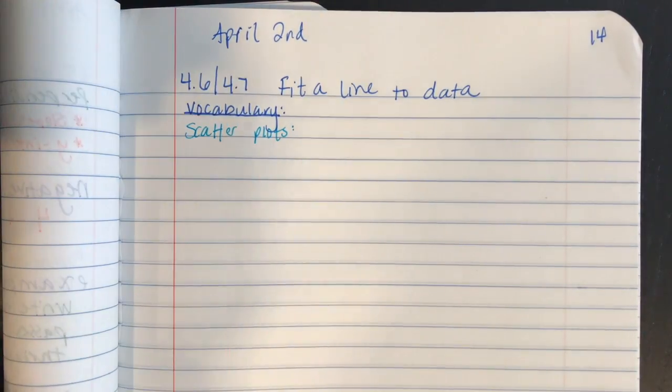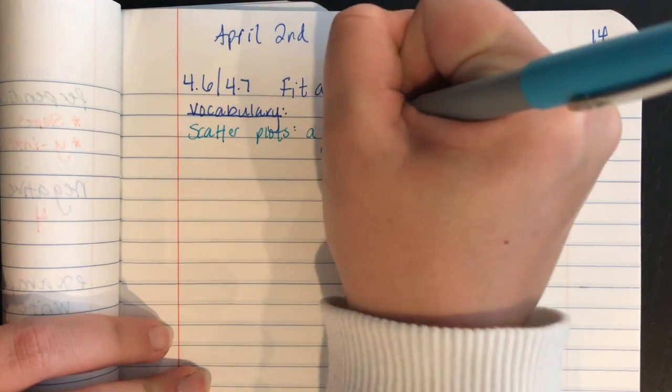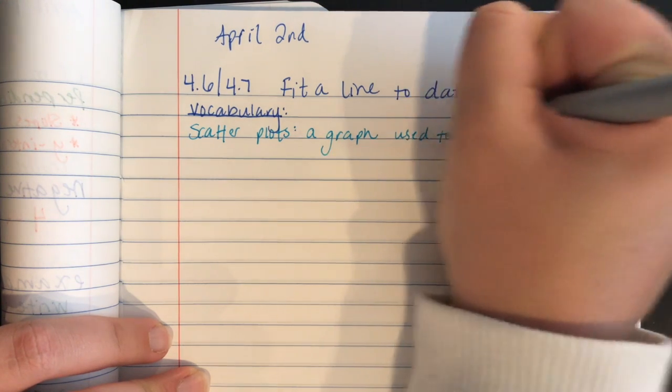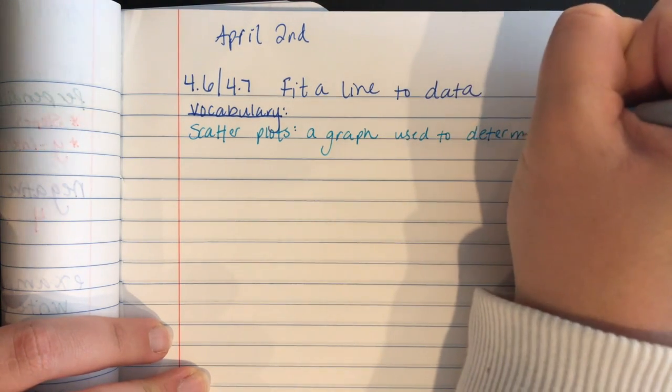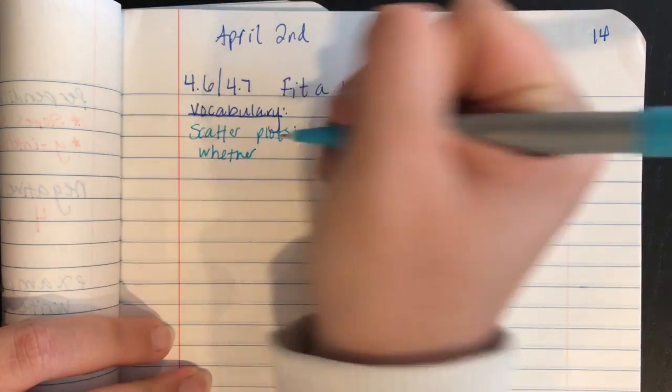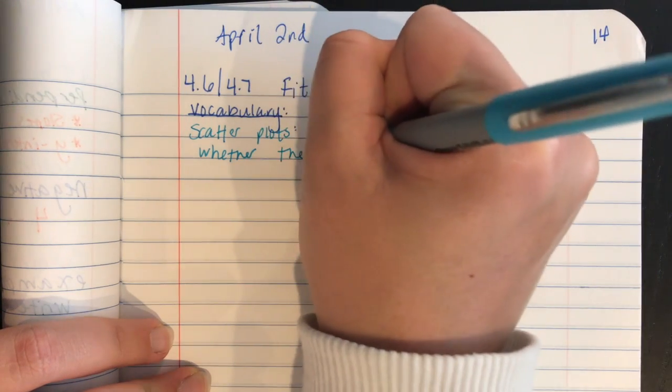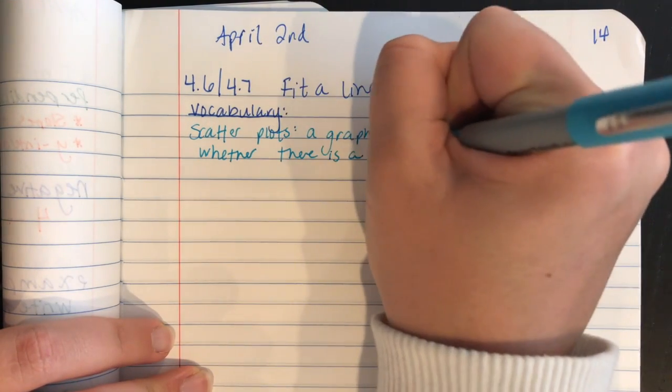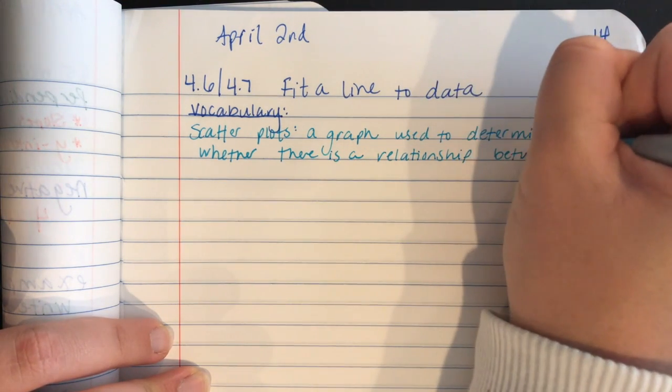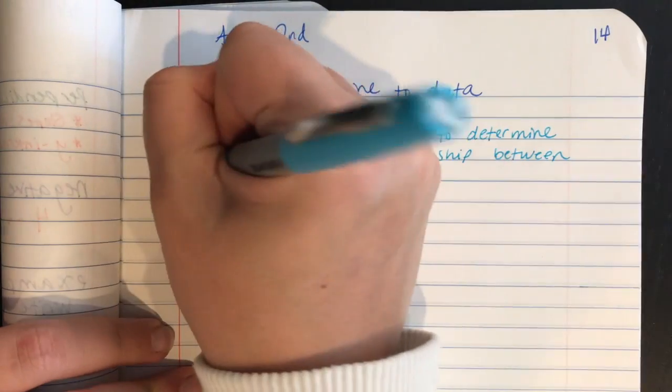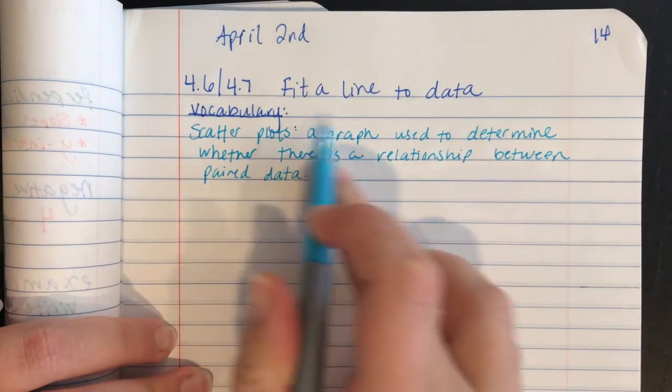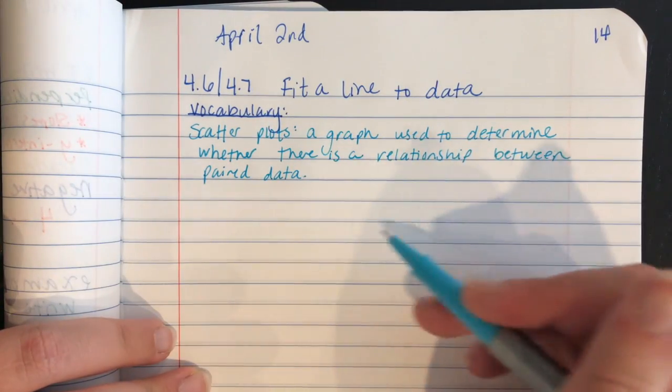So what we're going to learn today is really going to help you in science. A scatter plot is a graph used to determine whether there is a relationship between paired data.